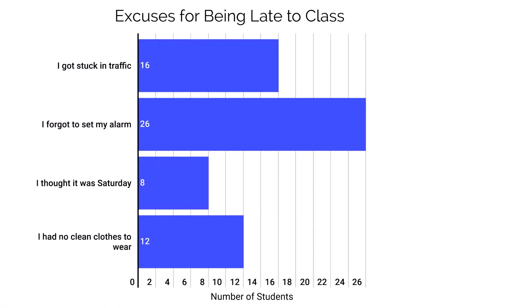In this chart, I'm displaying the excuses that students have offered up as reasons for being late to class. We can see by the labels on the y-axis some reasons include getting stuck in traffic, not setting their alarm, getting days mixed up, or not having any clean clothes to wear. The longest bar is forgetting to set their alarm, which occurred for 26 students.